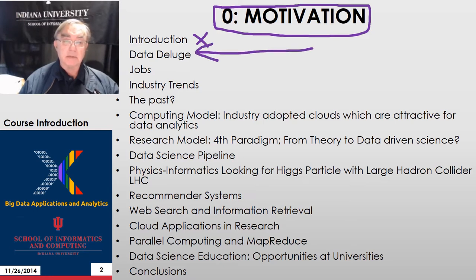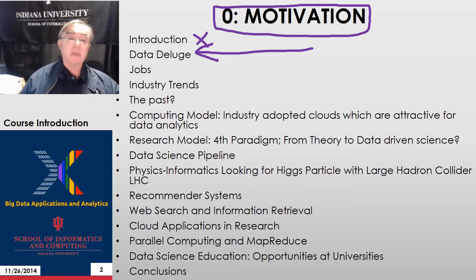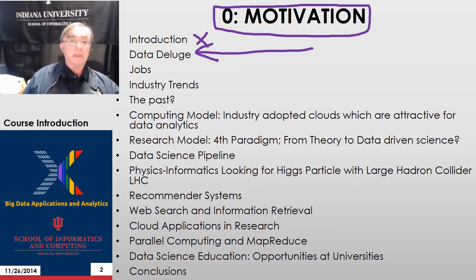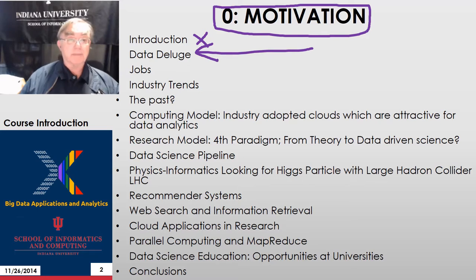Then just a discussion of where data is — the so-called data deluge — which includes the 16 zettabytes we're going to get by 2016, the 1.8 billion photos uploaded to the internet every day, the 15 petabytes analyzed by the Large Hadron Collider every year, and so on.